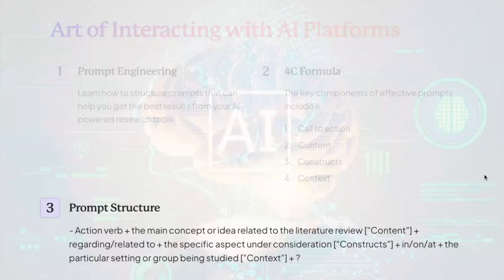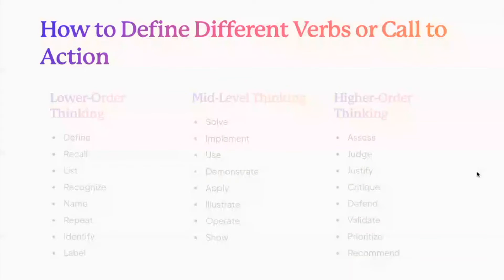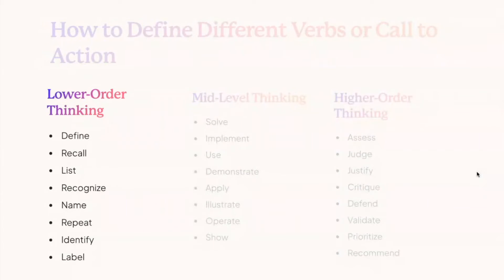Let's focus on what a prompt looks like, especially the verbs or call to action. There are three types of verbs we can understand. Those familiar with Bloom's Taxonomy will recognize this. One is called lower order thinking, then mid-order thinking, and higher order thinking. In lower order thinking, we ask the AI tool to bring information from its data bank — information it already has.